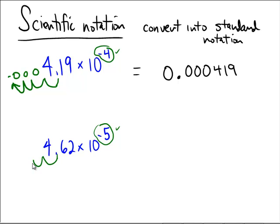2, 3, 4, 5. And that's going to be where my new decimal place is going to go. Put in our placeholder zeros. And so when I come over here to the final answer,